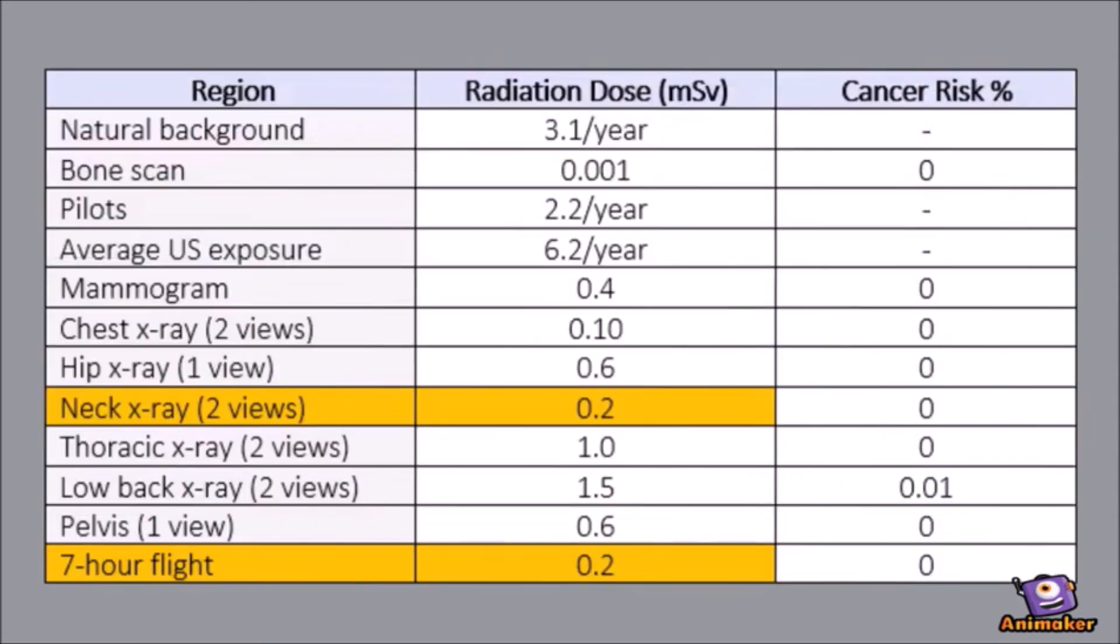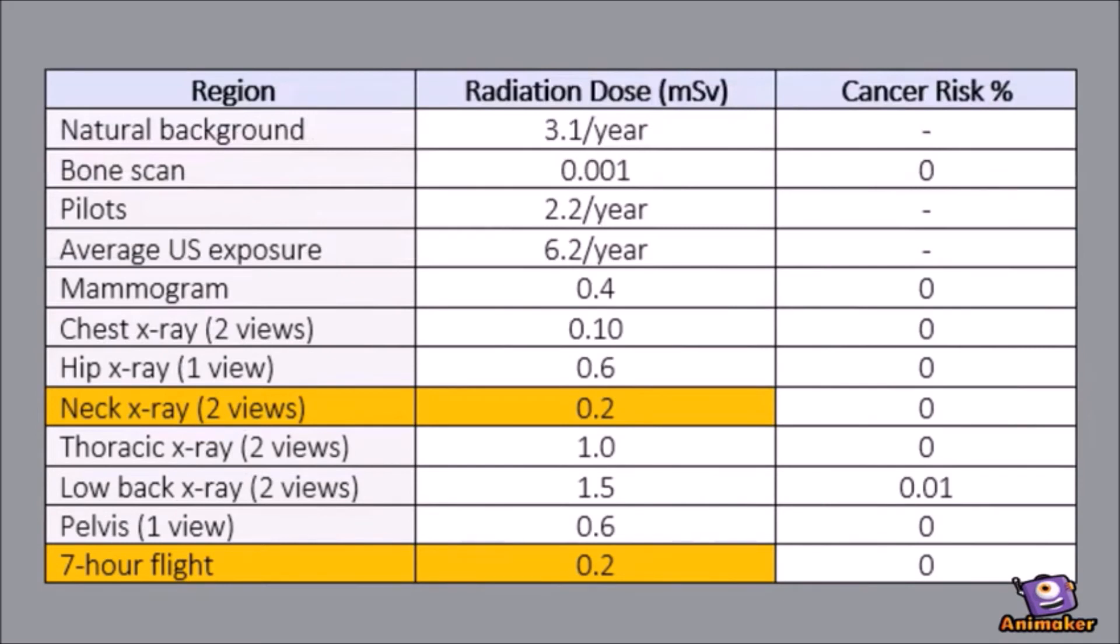Take a look at this chart, broken down into region of the body, total radiation dose in millisieverts, and any increased risk of cancer from that dose. So, our natural background radiation every year from household objects is 3.1 per year. A bone scan, 0.001.